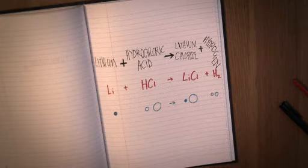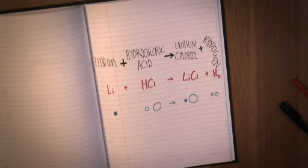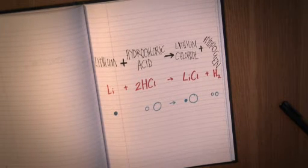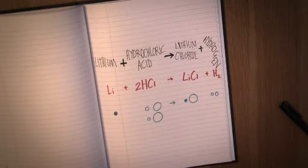Exactly, and you can't finish with less than one hydrogen molecule, so we'll have to increase the number of hydrogen atoms we start with. We can only do this by increasing the amount of HCl at the start. So let's put two in front of the HCl, which gives us Li plus 2HCl goes to H2 and LiCl.